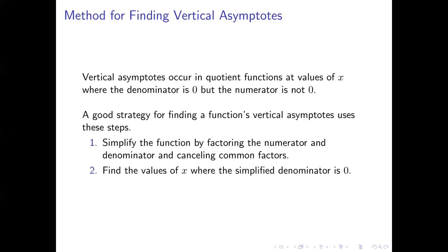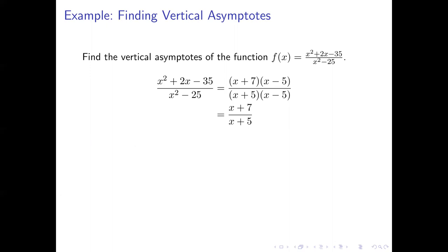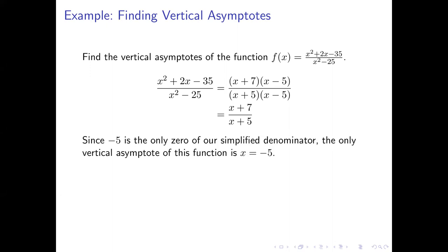Because you've already canceled common factors, you can be sure that the values of x found in step 2 do not make the numerator 0. Let's apply this to an example: we'll find the vertical asymptotes of the function defined by (x² + 2x − 35) over (x² − 25). Factoring the numerator and denominator reveals a common factor of x minus 5, which cancels, leaving the simplified fraction (x + 7) over (x + 5). The only value of x that makes that denominator 0 is negative 5, so the only vertical asymptote is the line x equals negative 5.